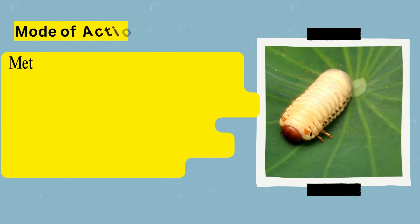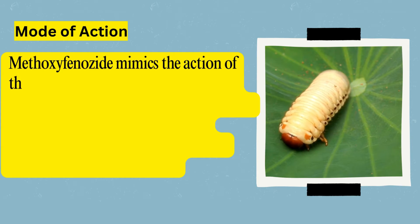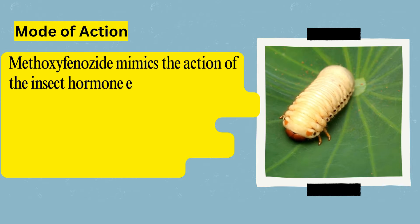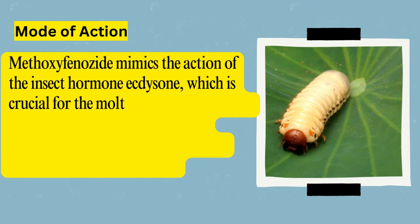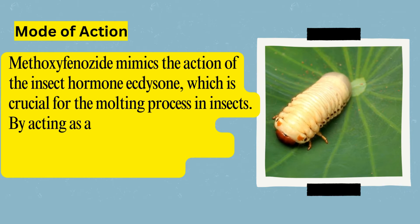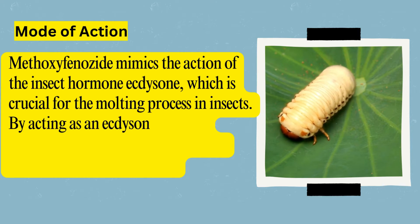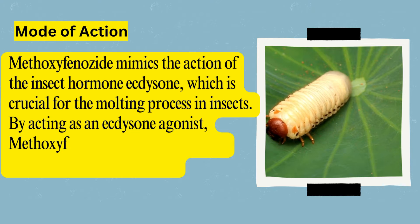Mode of action. Methoxyphenazide mimics the action of the insect hormone ecdysone, which is crucial for the molting process in insects. By acting as an ecdysone agonist, methoxyphenazide induces premature molting in caterpillar pests.